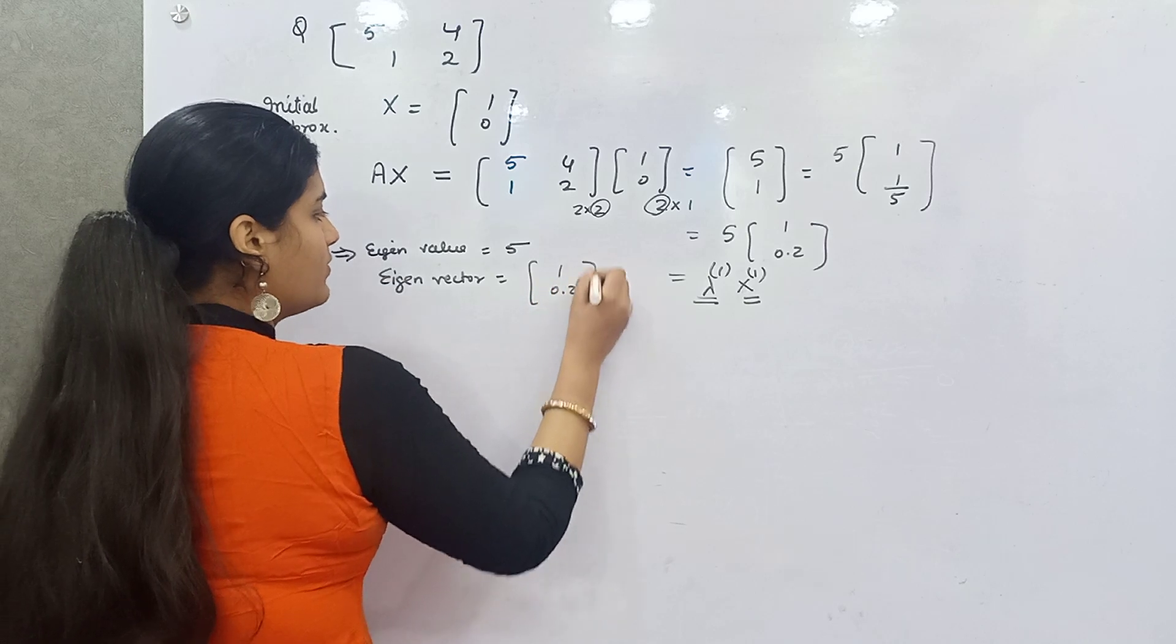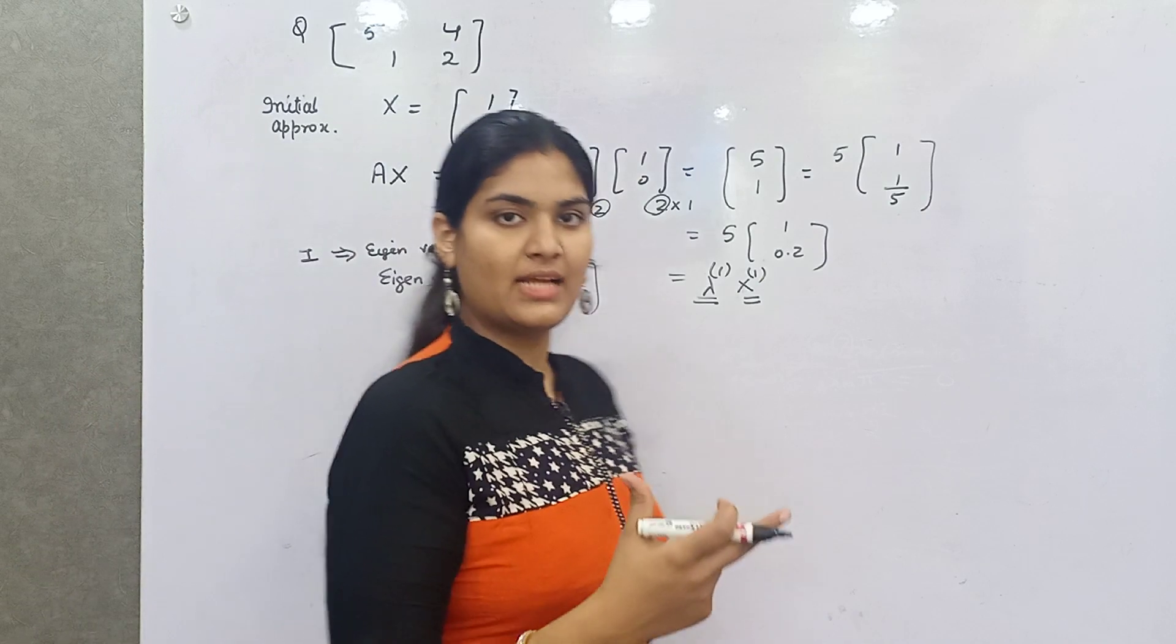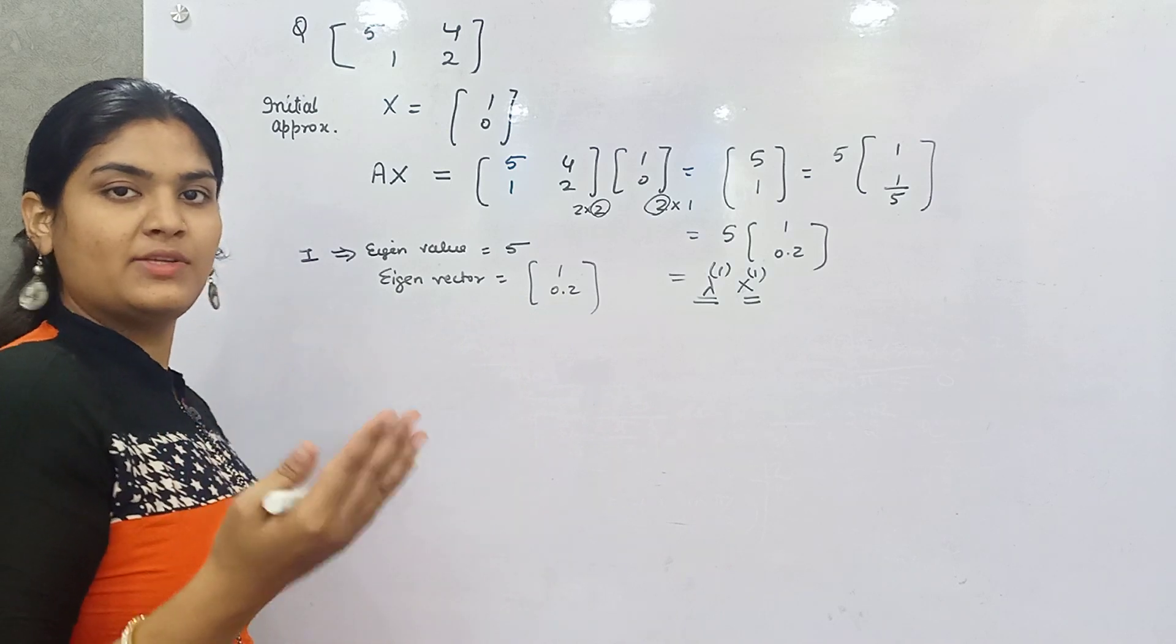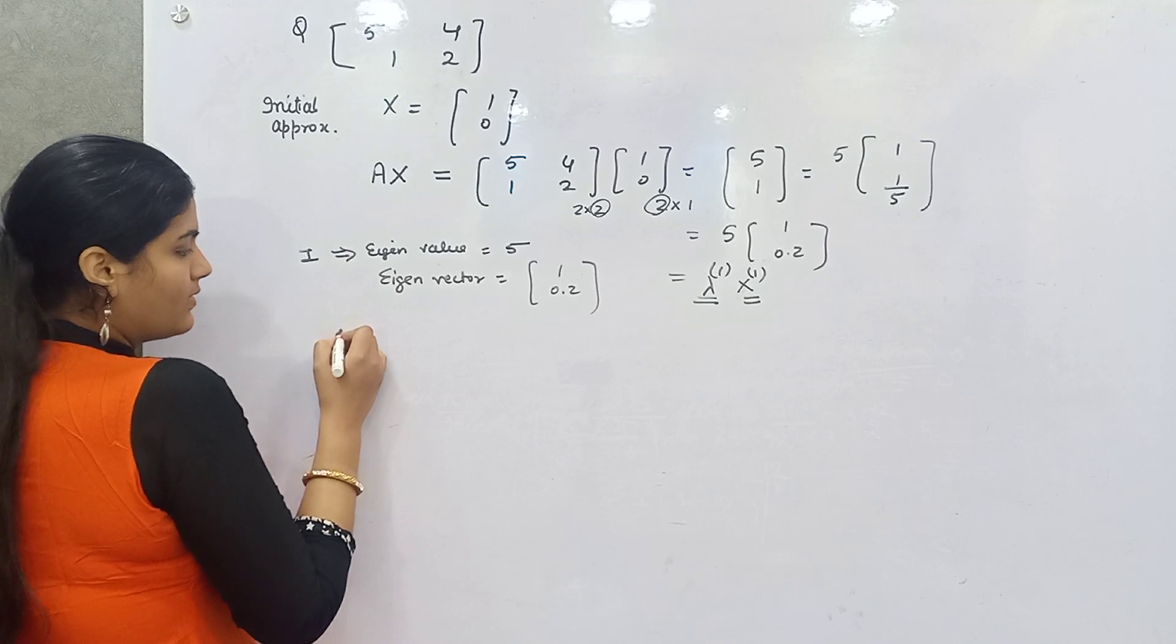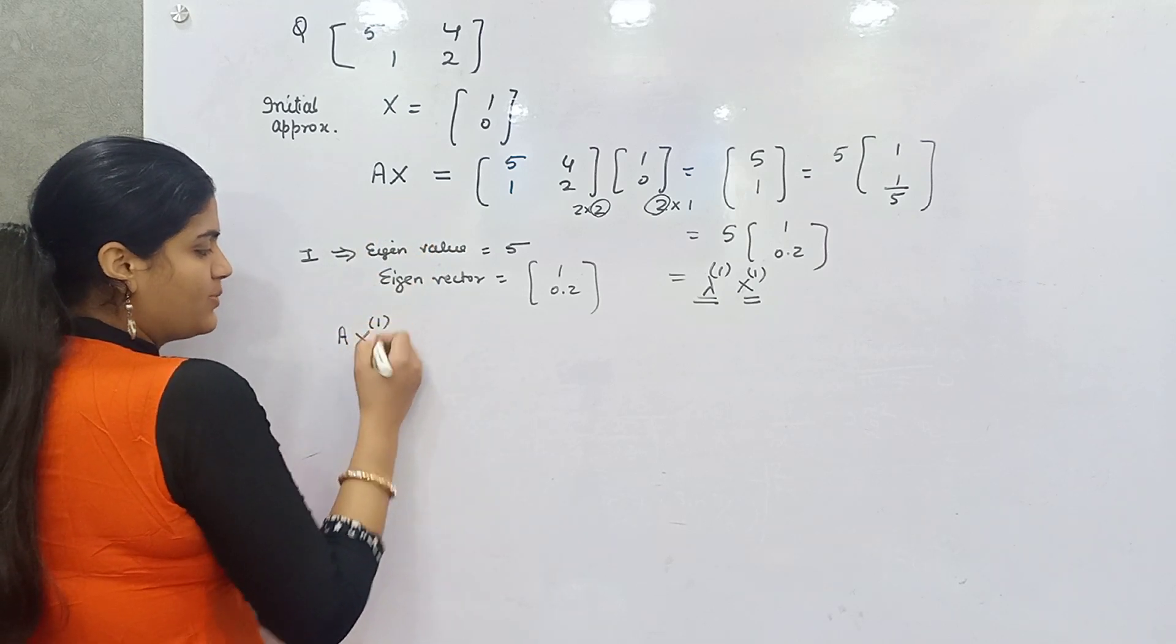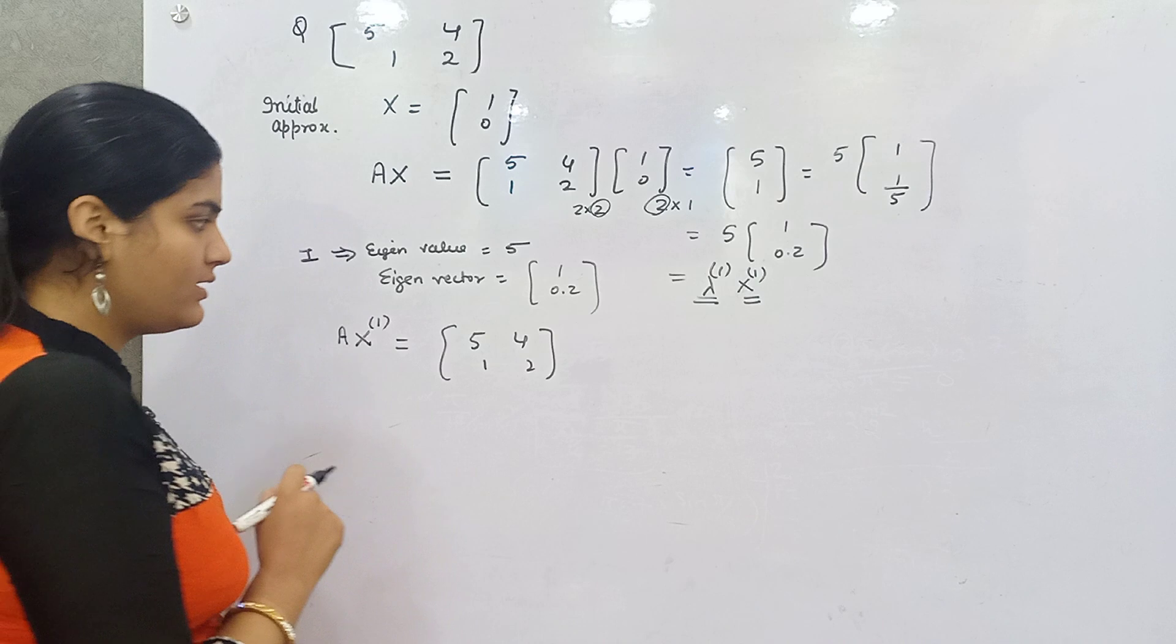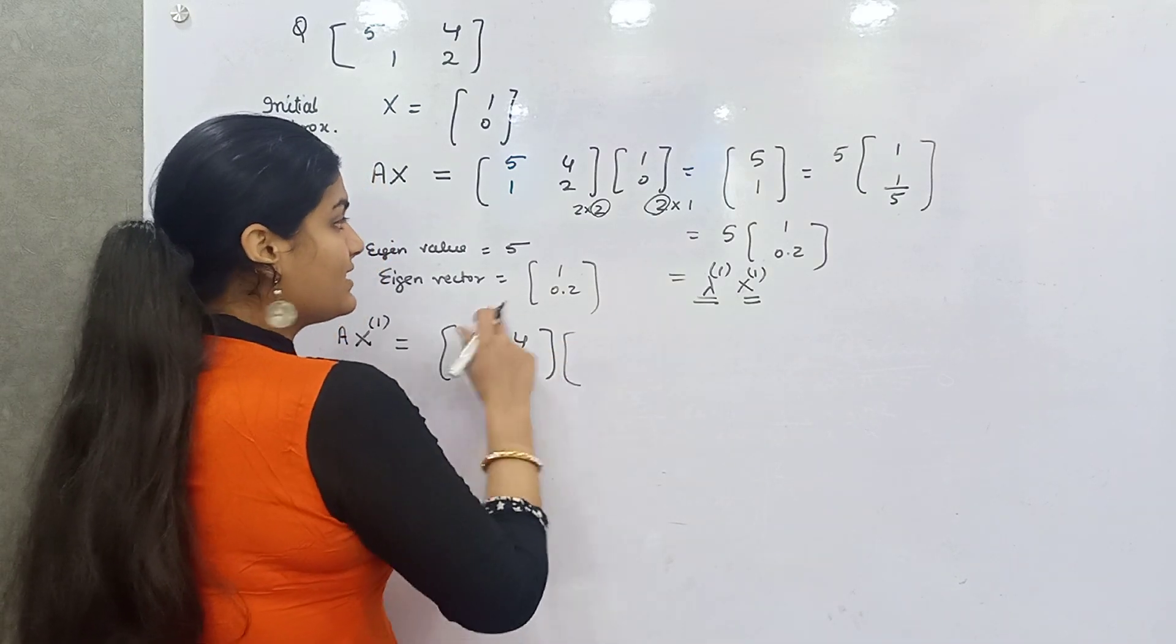Similarly, because you have to find out largest eigenvalue and vector, you have to keep going with lambda to the power 2, X to the power 2, lambda to the power 3, X to the power 3. So when you take this as AX, now you have to take AX to the power 1. A is [5,4; 1,2]. This is what we are doing for our second eigenvalue and vector.